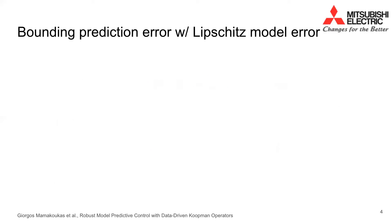Koopman-based control has enabled fast nonlinear feedback using linear tools, but existing approaches ignore the modeling error during control, which can lead to constraint violations.